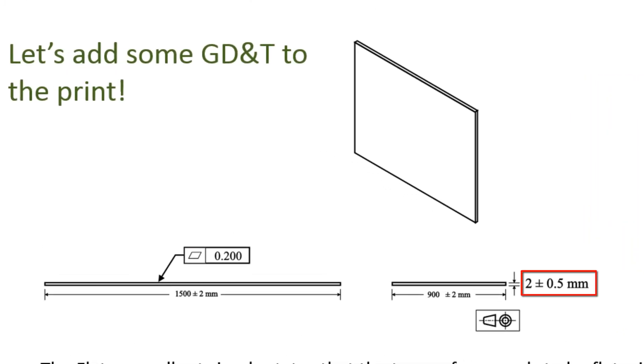Also look at the thickness tolerance. It is now five times what it was before. Now everyone looking at this print can understand the design intent. The top surface needs to be flat and that we really don't care about the thickness tolerance. It's not really critical.